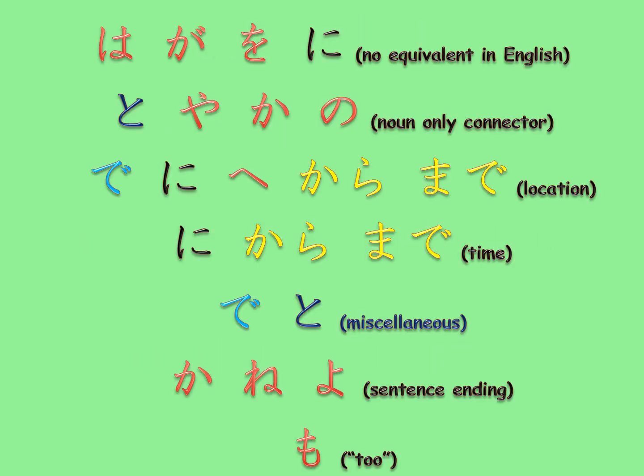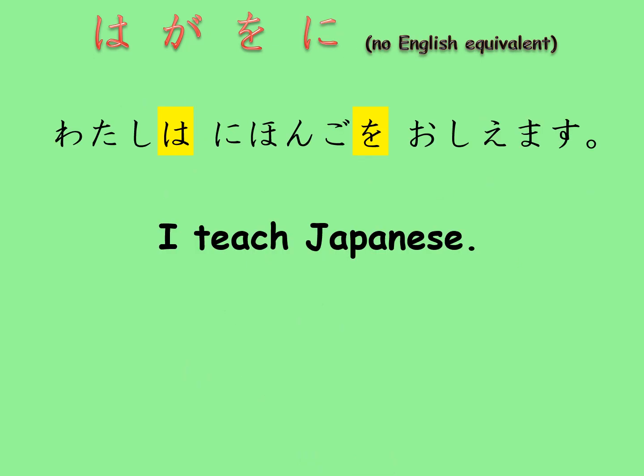Okay, let's start. These are the seven groups. As you can see, some are doubling up in more than one group — that is because one particle can have multiple meanings and usages. The first group is wa, ga, o, and ni.